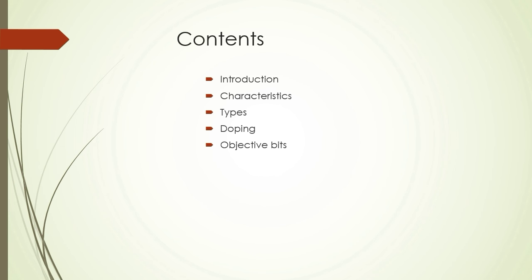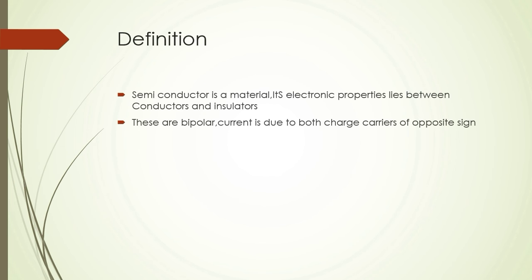Welcoming to the definition of semiconductors. A semiconductor is a material whose electronic properties lie between conductors and insulators. One more interesting point about semiconductors is that these are bipolar.